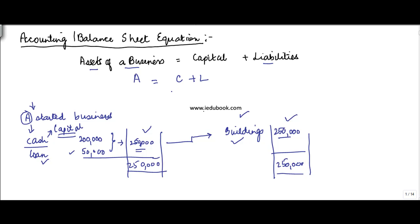From your basic mathematics, you know how to extrapolate this. You can also write that capital is equal to what? You move this to the other side, so it becomes A minus L.